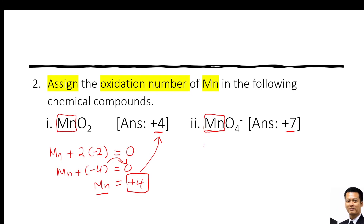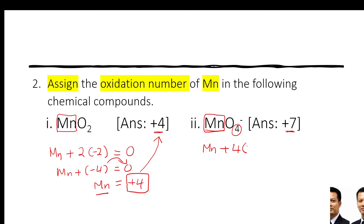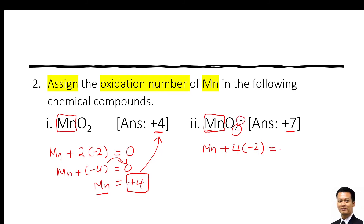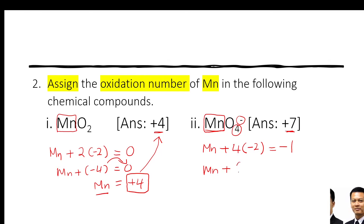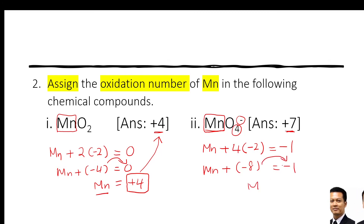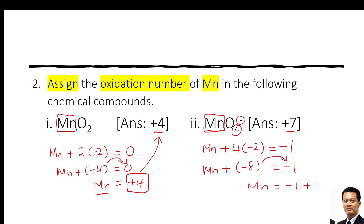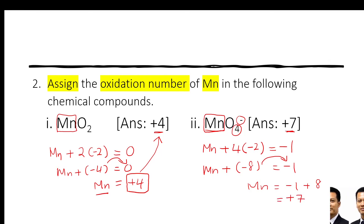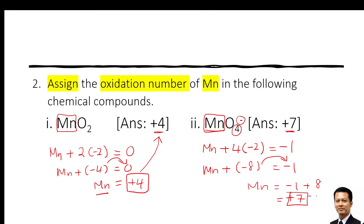For MnO₄⁻: write Mn plus 4 times (−2) for oxygen — oxygen is always −2. The ion has a negative charge, so the total charge is −1. So: Mn + (−8) = −1. Bringing −8 to the right gives Mn = −1 + 8 = +7. So the oxidation number for Mn in MnO₄⁻ is +7.